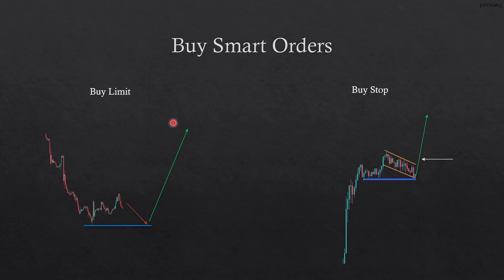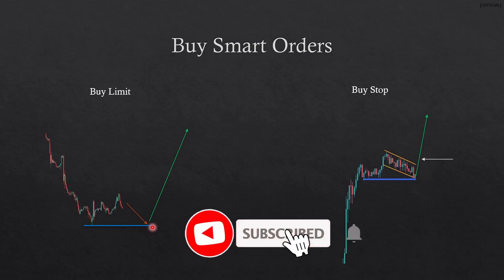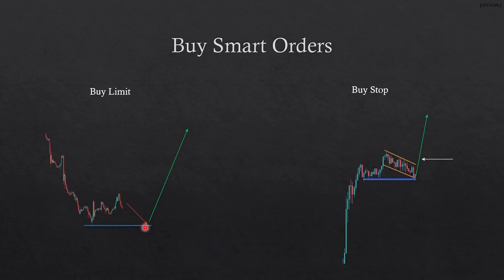For a buy limit it's basically the same as the sell limit, just upside down. Price went down and as a double bottom trader I'm expecting price to go down before it goes up to complete that double bottom formation, which looks like a W. I'm expecting that when price touches this resistance zone it's going to bounce back up. You place your buy limit here, and when price gets there you're going to be tapped in for a buy.